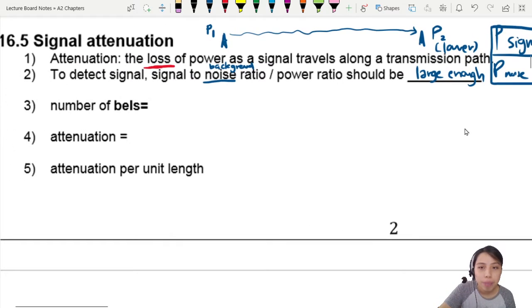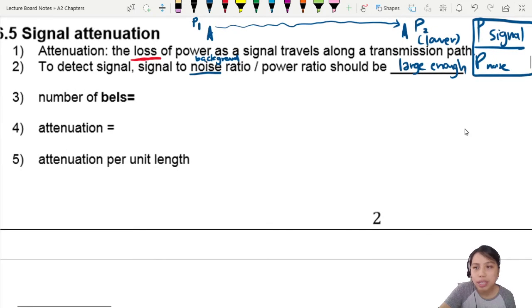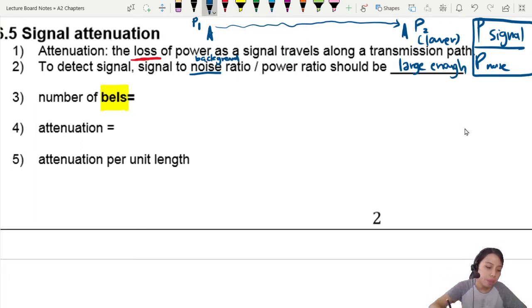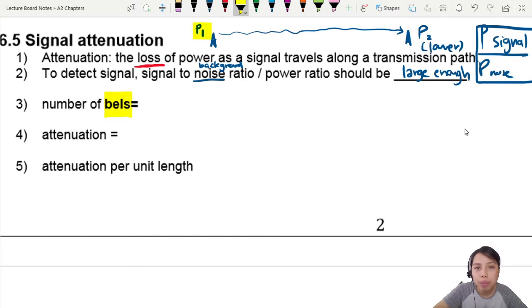But first things first, what is the equation for attenuation? Before we go into attenuation, I want to introduce you a new unit called BEL, B-E-L. We may not have seen BEL before, but hang in there, you will see something familiar. BEL is like a ratio. You have something from transmitter at a certain point, after a certain distance, you go to a lower power because of loss of power. We decided to take the log 10 of P2 over P1. We can use this to quantify the signal loss or signal attenuation.